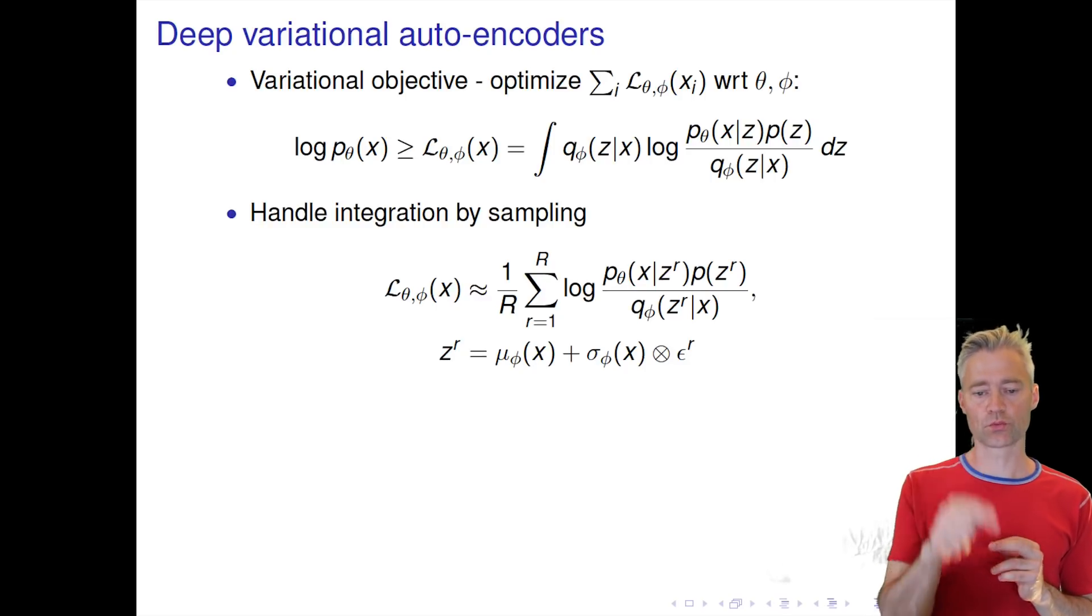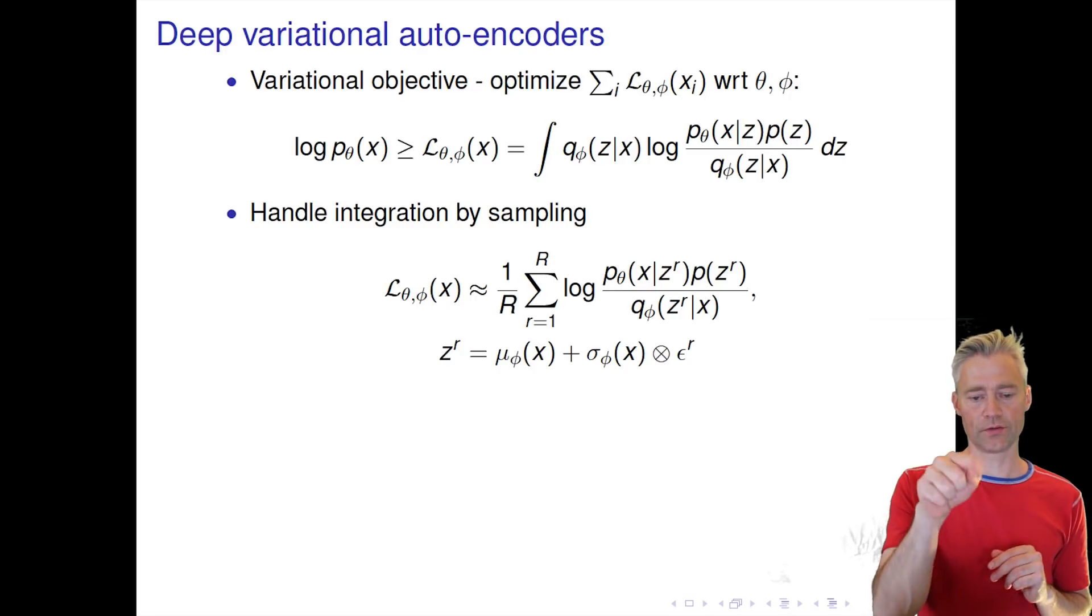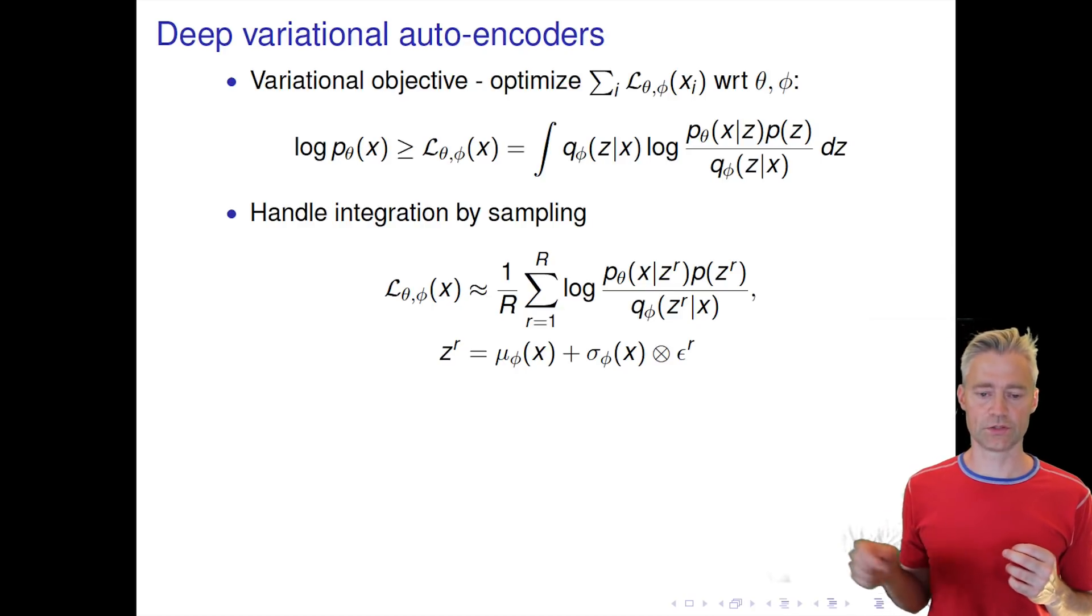Instead of having the integral, we replace that by a sample where in this expression we have drawn r samples. Usually we set r equal to 1 to get the optimal trade-off between speed and accuracy.